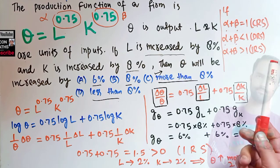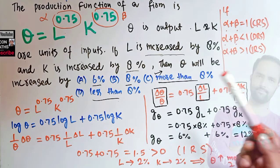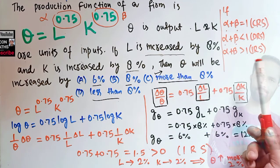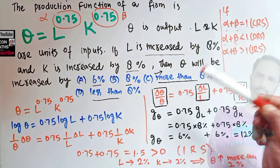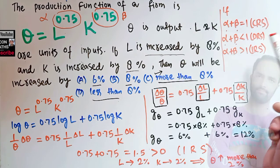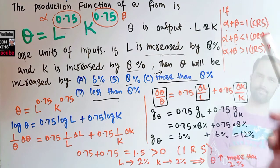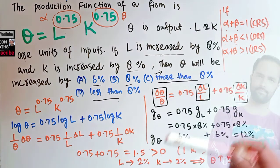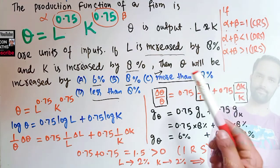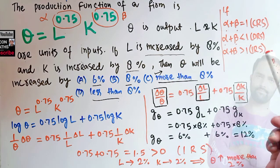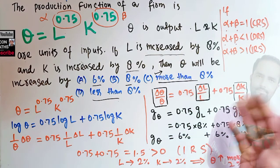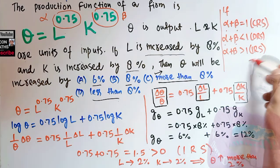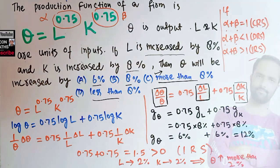Simply put: if the sum of the exponents of a Cobb-Douglas production function equals 1, we have constant returns to scale — doubling inputs gives double the output. If the sum is less than 1, doubling inputs gives less than double the output. If the sum is greater than 1, doubling inputs leads to more than double the output. I hope that is clear. Thank you.